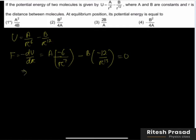So minus 6A by r to the power 7 equals B times 12 by r to the power 13. Cancel the 6, this becomes 2, then r to the power 7 cancels, this becomes 6.